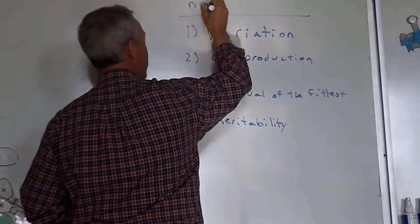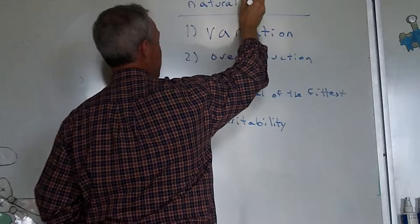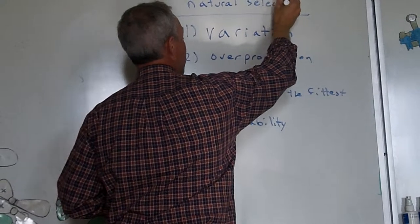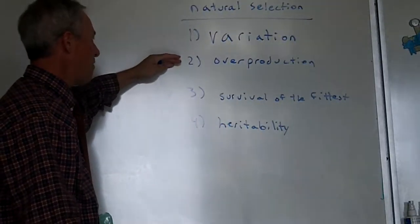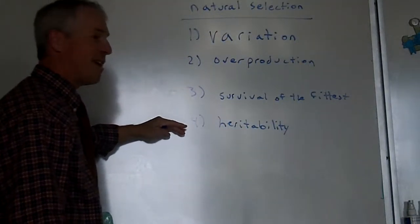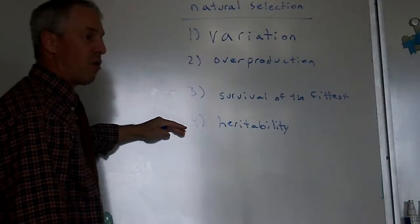So, the four of these all together, these are the four things you need for natural selection to occur. This is Darwin's theory of natural selection. What Darwin is saying is that if you have this, and if you have this, and if you have this, and if you have this, organisms, populations will change.